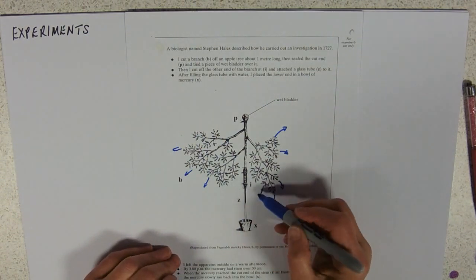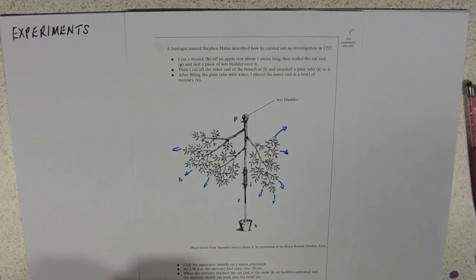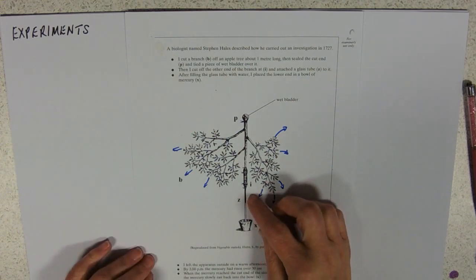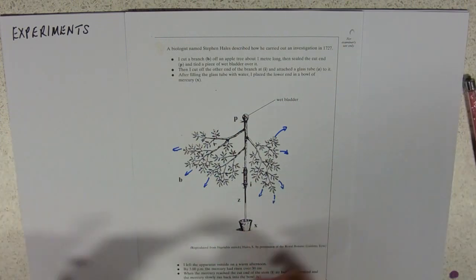But what he's done at this end, at eye end, and you can probably read this for yourselves on the video. It says he cut the other end of the branch and attached a little glass tube to it with water in it. And then dipped the whole thing in mercury down here.